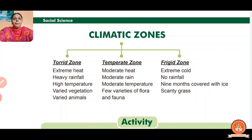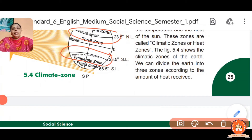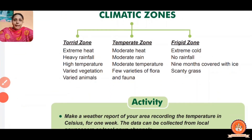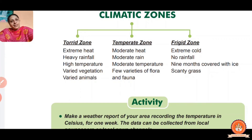Second, the Temperate Zone — this part has moderate rain, moderate heat, and moderate temperature. It has few varieties of flora and fauna. Flora means plants, and fauna means animals.